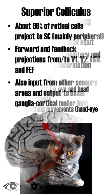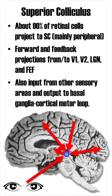The majority of retinal cells, and particularly peripheral cells, project to the superior colliculus. Feed-forward and feed-backward projections exist between the superior colliculus and the early visual cortex, lateral geniculate nucleus, and the frontal eye field. In addition, the superior colliculus receives input from other sensory areas and has outgoing projections to the basal ganglia cortical motor loop.